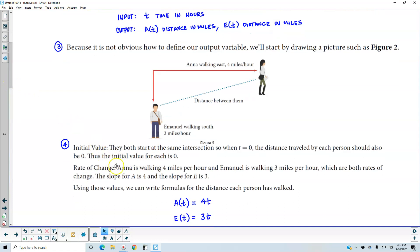Now, the rate of change: Anna is walking 4 miles per hour, and Emanuel is walking 3 miles per hour, which are both rates of change. The slope for A or Anna is 4, and the slope for E is 3.